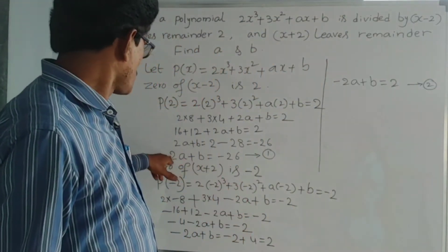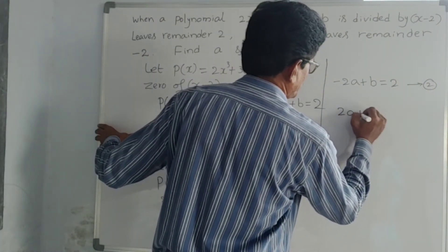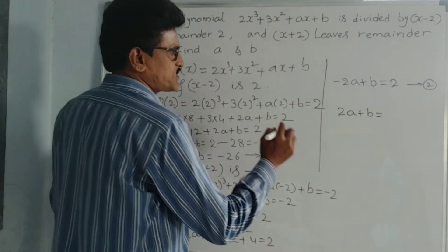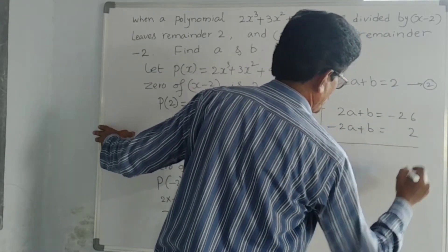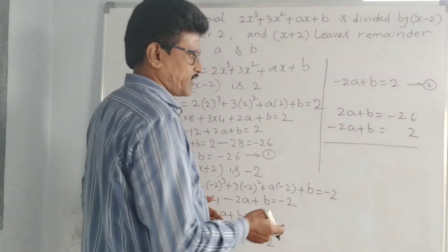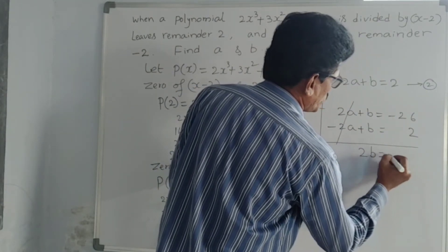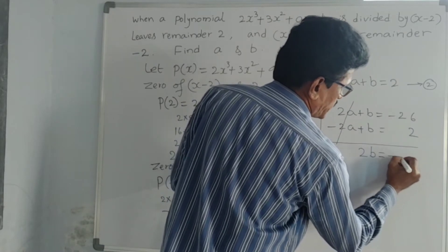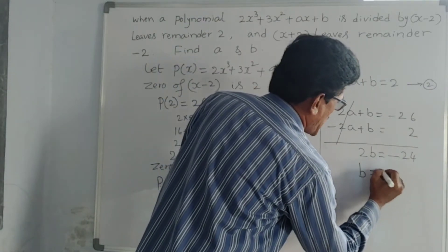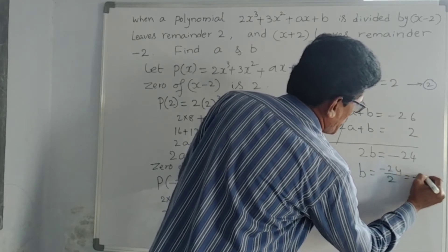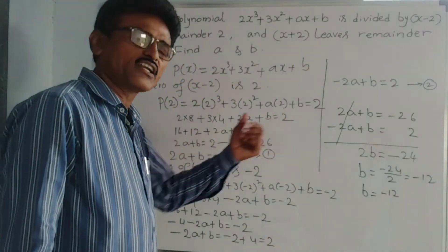First equation: 2a plus b equal to minus 26. Second equation: minus 2a plus b equal to 2. Solve these two equations by addition. 2a and minus 2a cancel. b plus b is 2b. On the right: minus 26 plus 2 — minus is more, so minus 24. Therefore b equal to minus 24 by 2, which is minus 12. Substitute b value in the first equation to get a.